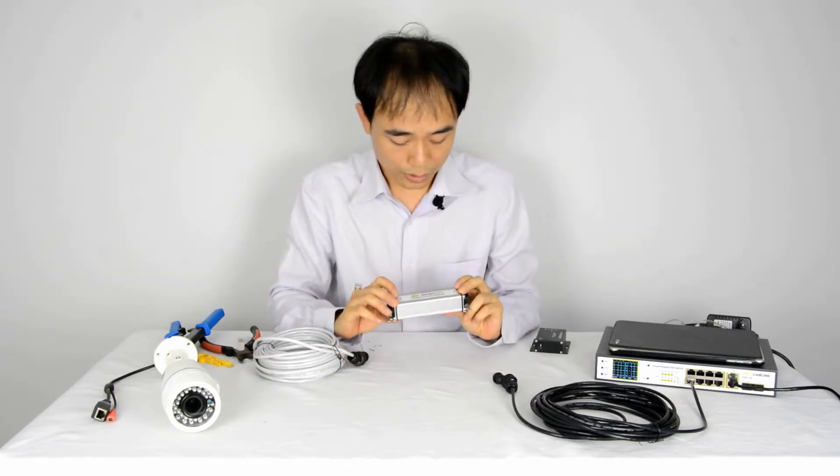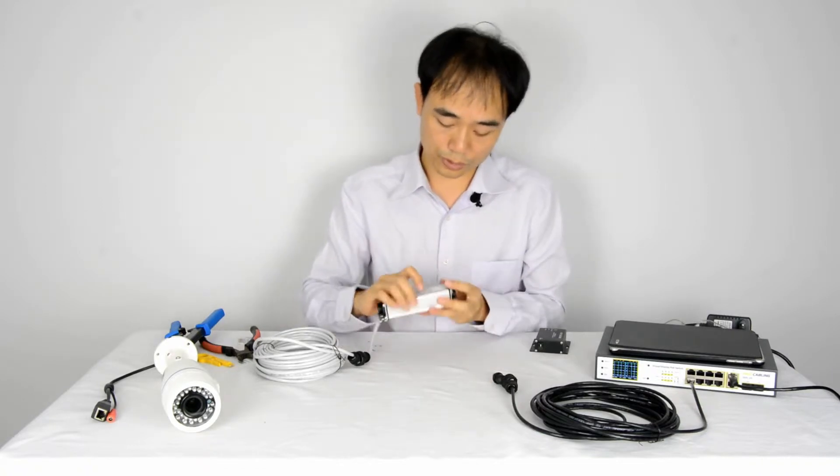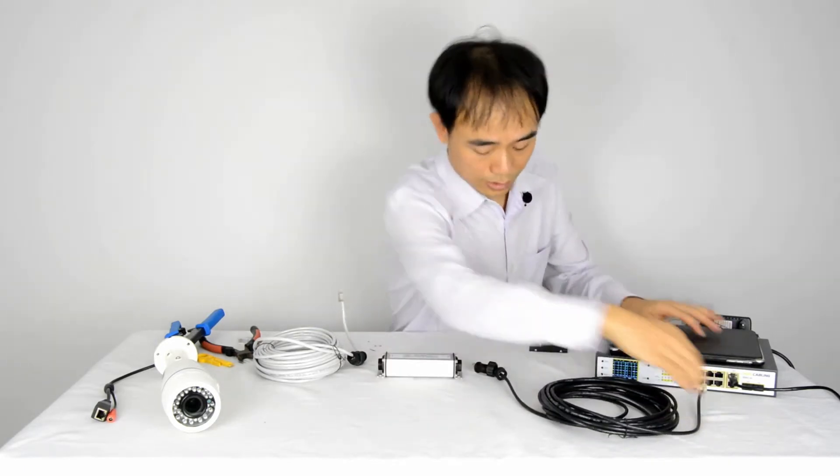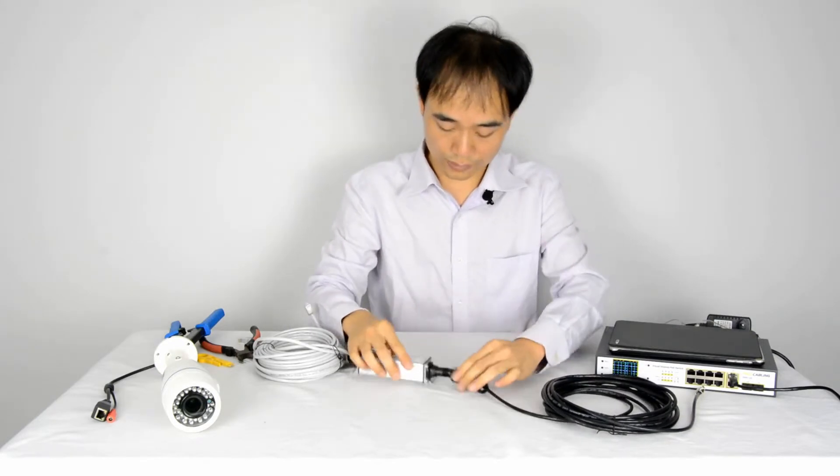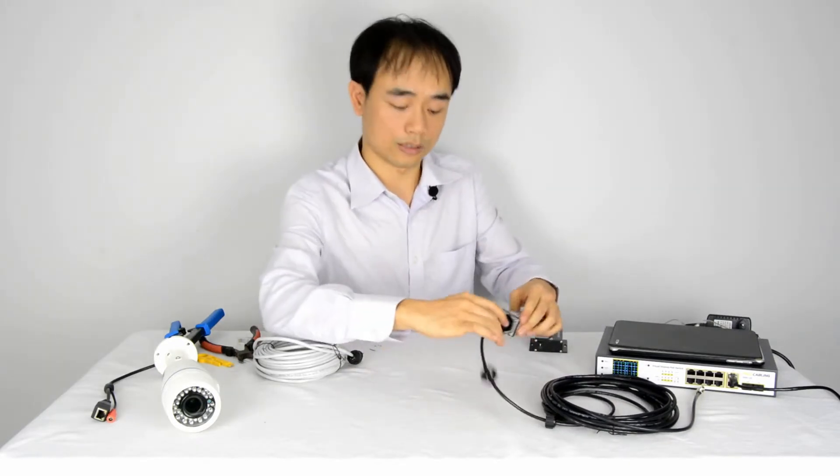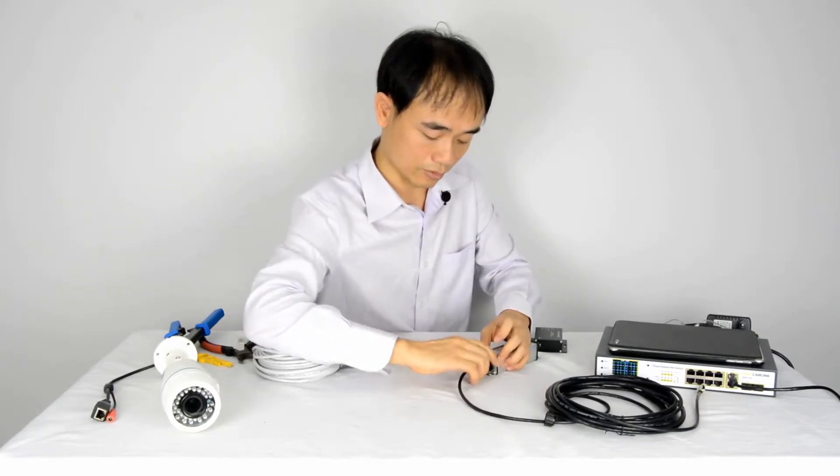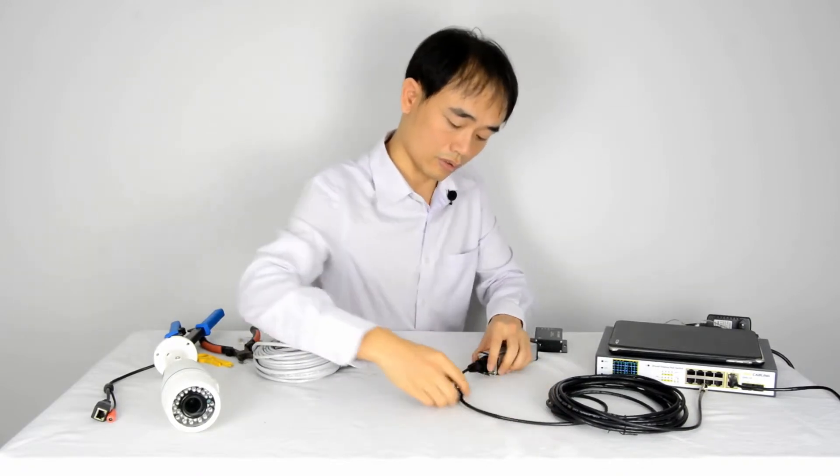And we got the PoE in and PoE out. We connect the PoE in to the cable from the switch. First we disconnect. Then we fasten the cable by using this ring to lock the cable. Also the second one.